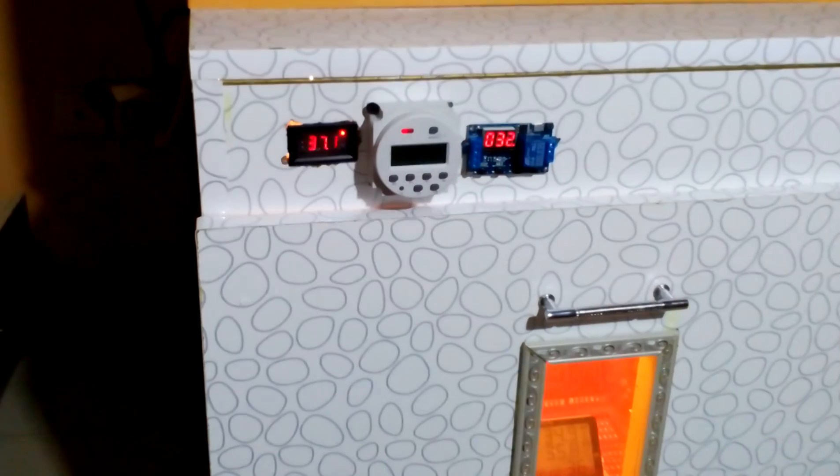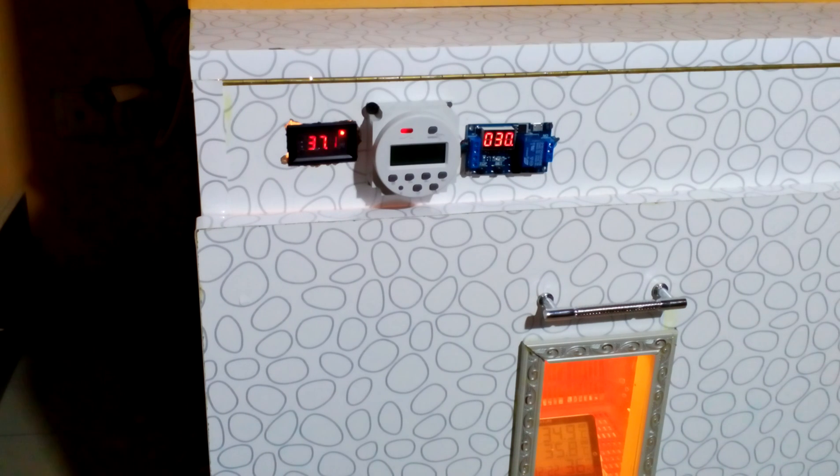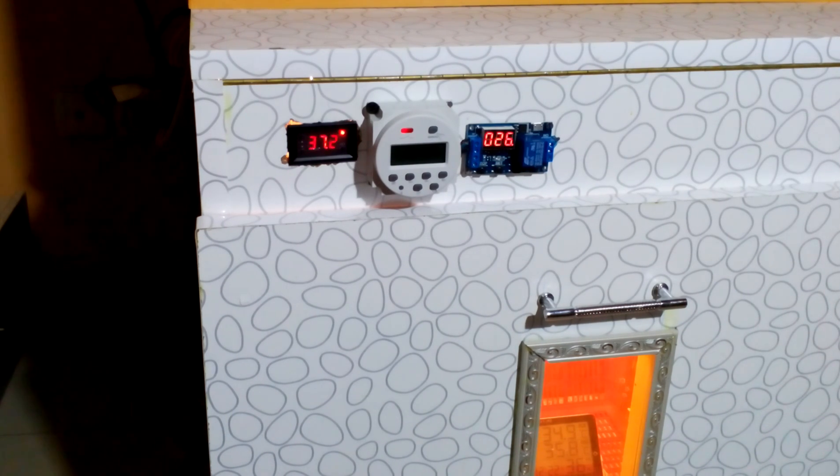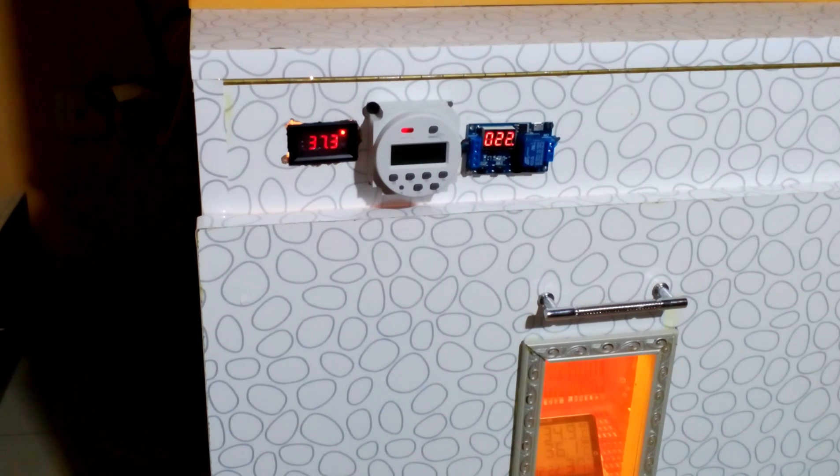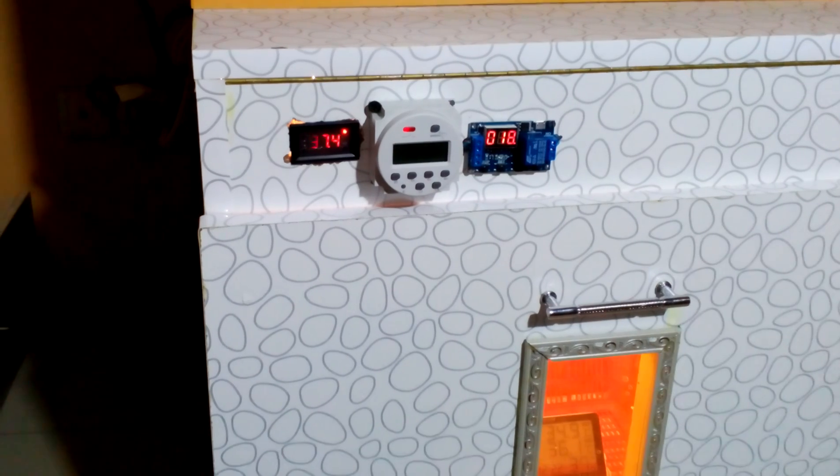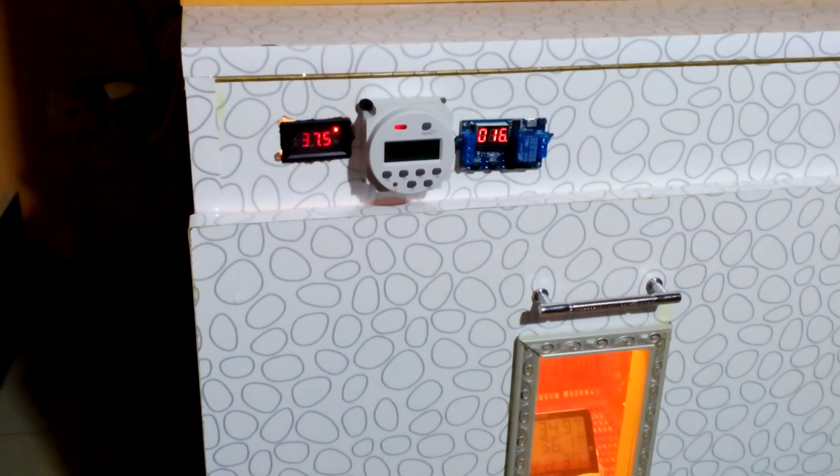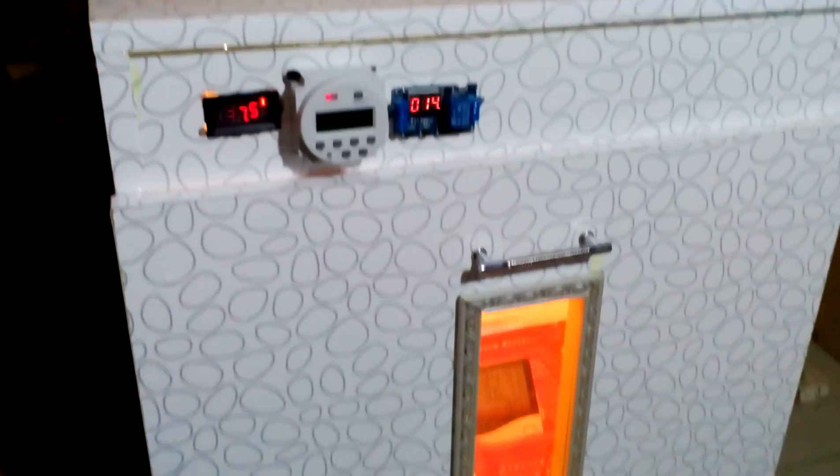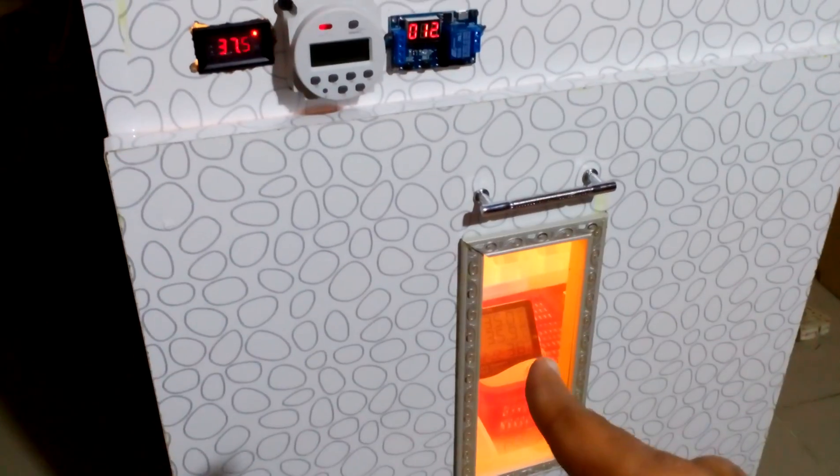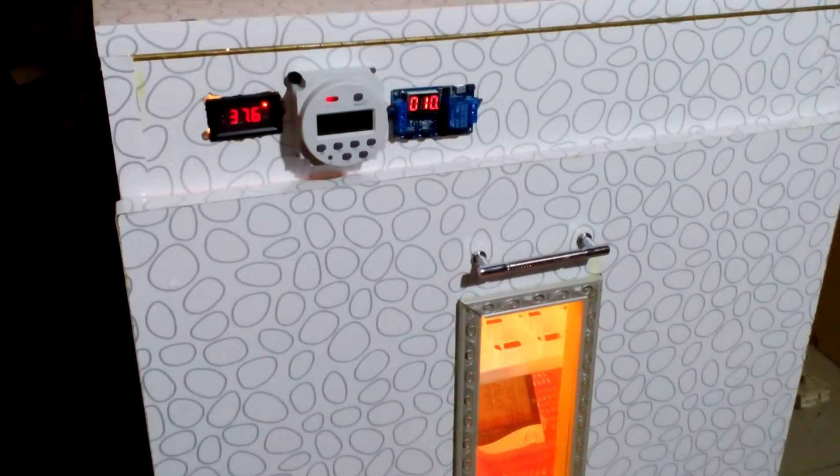The CN 101 is for the egg turner, and another timer, the yellow or blue one, is for the humidifier. We have set it up for about five seconds after every two minutes, so it will only turn on then. After doing that setup, our humidity will rise to about 45 to 60 percent.